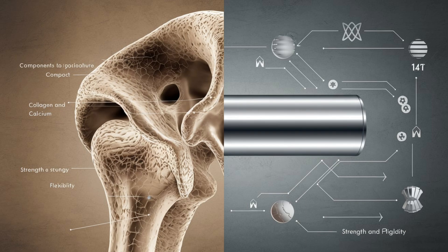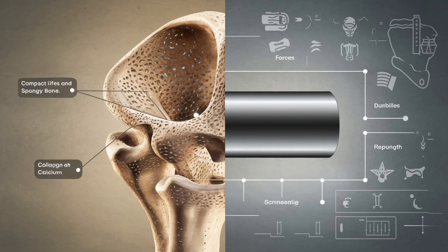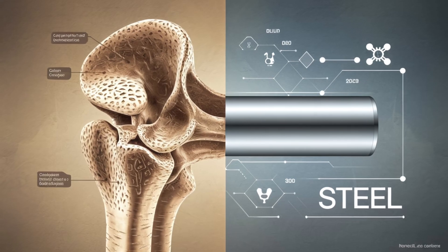New materials modeled after bone structures are helping engineers build stronger, lighter, and more resilient designs. The perfect blend of strength and flexibility that bone offers is a blueprint for innovations in fields like aerospace, architecture, and even robotics.